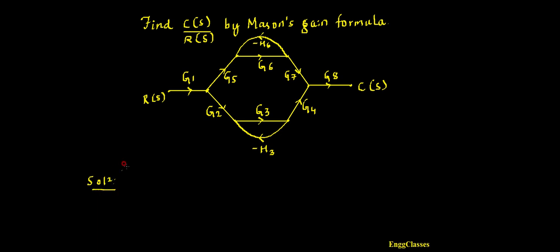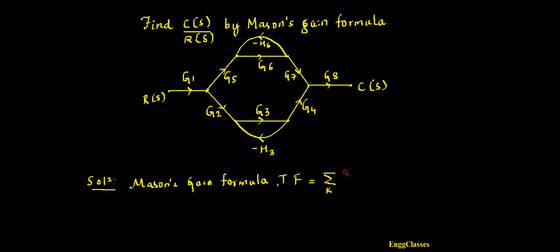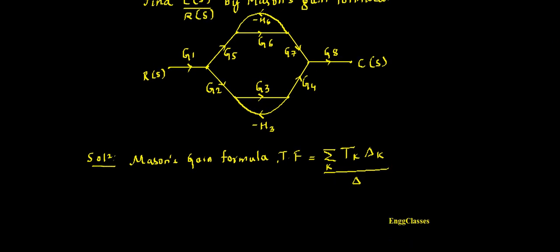Let me consider the solution now. First, what is Mason's Gain Formula? The transfer function is equal to summation over K of T_K times Delta_K, divided by Delta. This is Mason's Gain Formula.